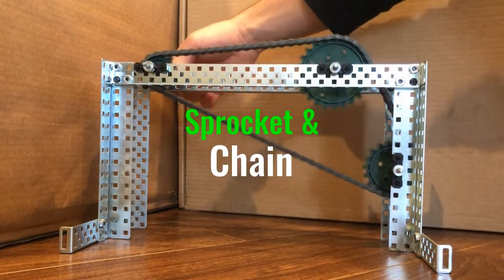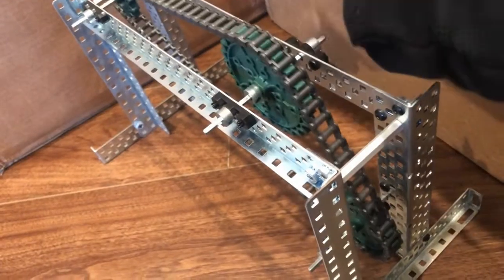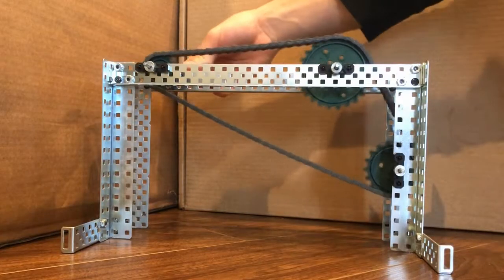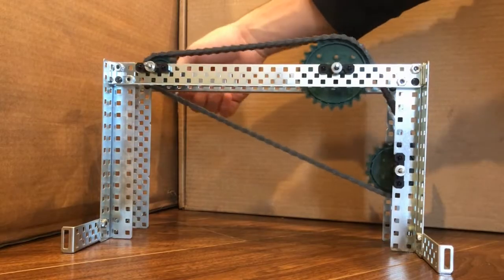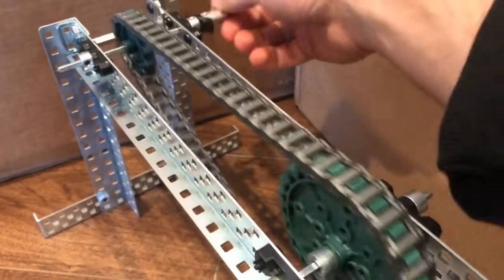Sprockets and chains use a rotary motion input in the form of a sprocket to drive a chain that spins a rotary motion output sprocket. The direction of motion does not change as all sprockets on the chain follow either clockwise or counterclockwise depending on the input.